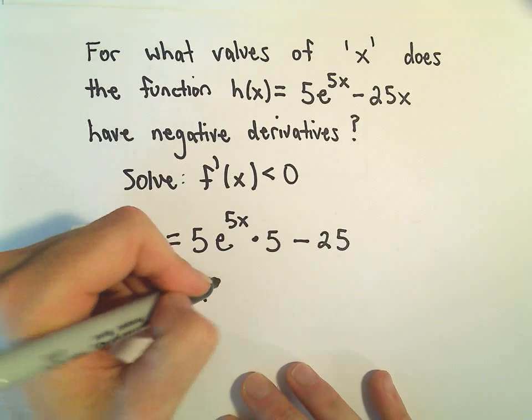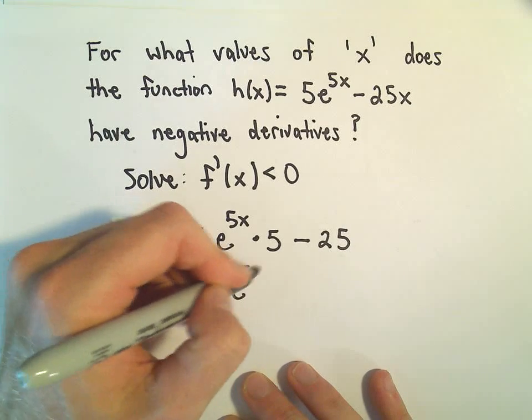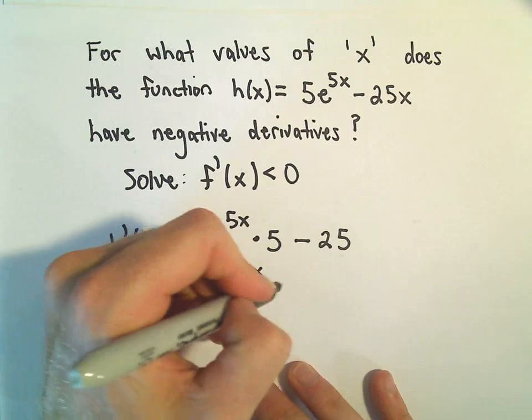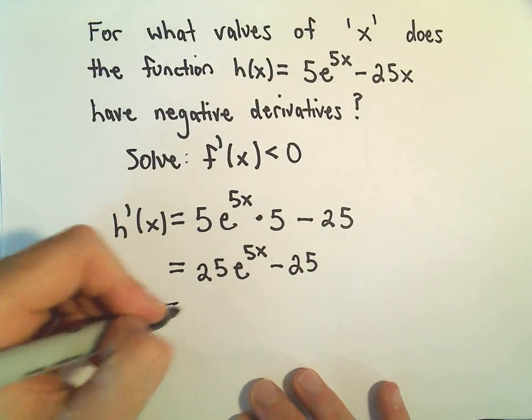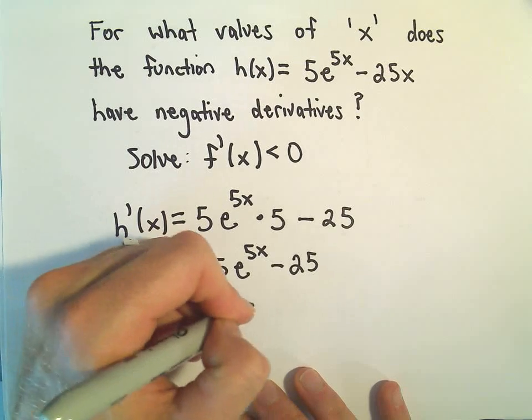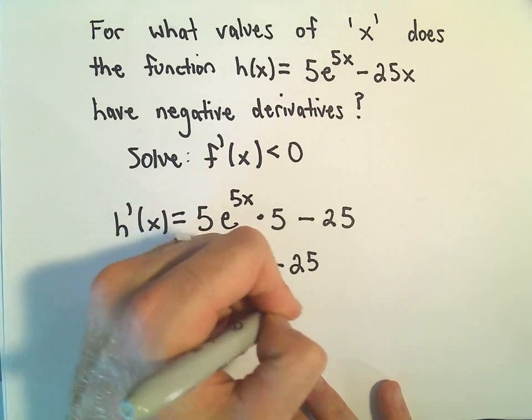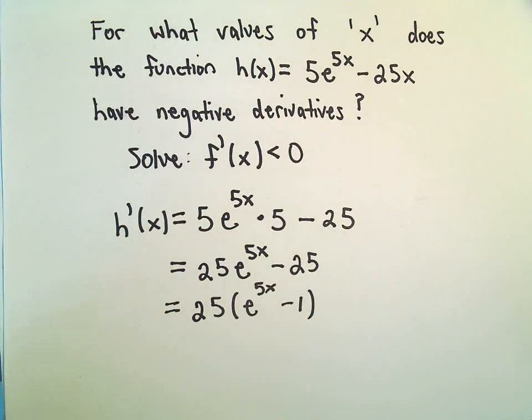So 5 times 5 is 25. We have 25 times e to the 5x minus 25. And what we can do now is just factor the 25 out of there.